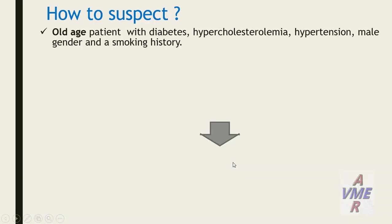How to suspect the popliteal aneurysm? Old-age patients with diabetes, hypercholesterolemia, hypertension, male gender, and smoking history — these are the atherosclerosis risk factors.